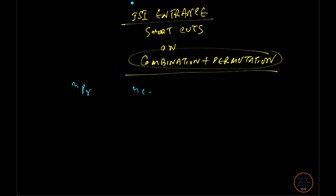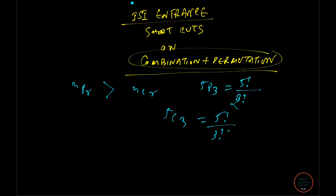The first question: which is higher in value, NPR or NCR? Obviously NPR is higher. For example, 5P3 = 5! / 2!, whereas 5C3 = 5! / (3! × 2!) — we are dividing by something more, so the permutation value remains higher. In general, NPR ≥ NCR, with equality when R = 0.